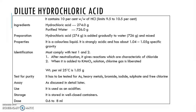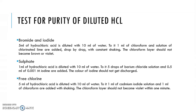For the purity test of hydrochloric acid, we test for the presence of bromide and iodide. By diluting the hydrochloric acid in water, adding chloroform and chlorinated lime, the chloroform layer should not become brown or violet. If it does become brown or violet, it means there is a presence of bromide or iodide.